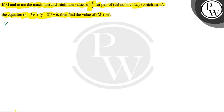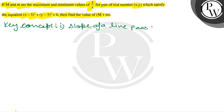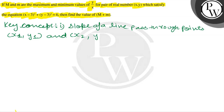Firstly, I will tell you the key concepts that will help with this question. The first key concept is the slope of a line passing through two points (x1, y1) and (x2, y2), which is given by y2 minus y1 divided by x2 minus x1.